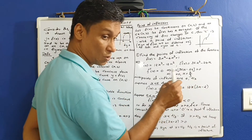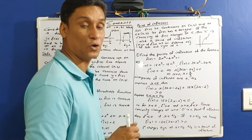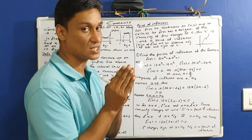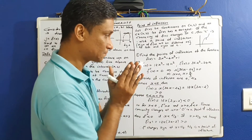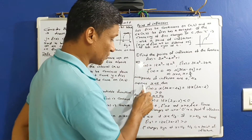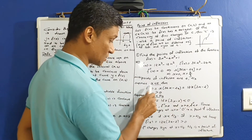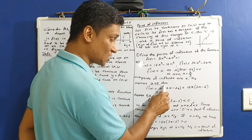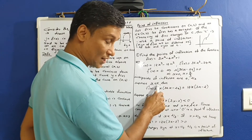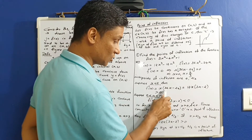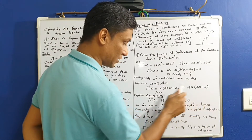Possible points of inflection are at x equals 0 and x equals 2 by 3. Now suppose x less than 0: f double dash x equals 12x into 3x minus 2, and also equals 12x into 3x minus 2.